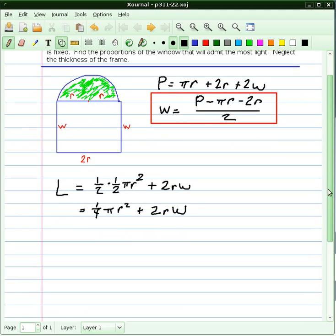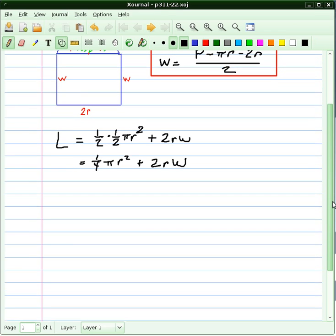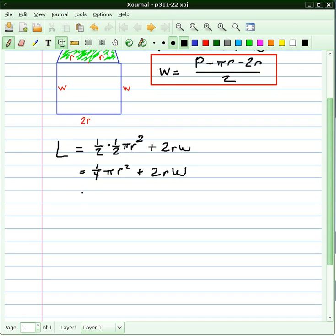Quick little simplification here, I get one-fourth πr² plus 2rw. I'm going to scroll this up a little bit so my handwriting can be clearer. At this point I need to go ahead and eliminate that w, so we're going to plug in that expression we already found. That means that our light is now one-fourth πr² plus 2r times our expression for w, which was P minus πr minus 2r over 2.